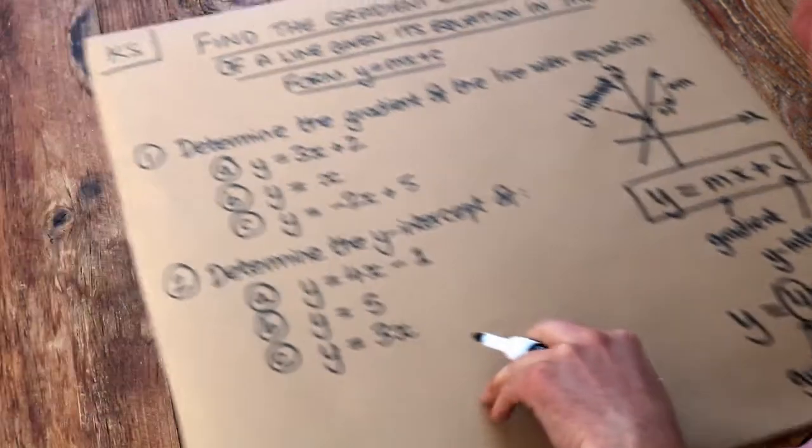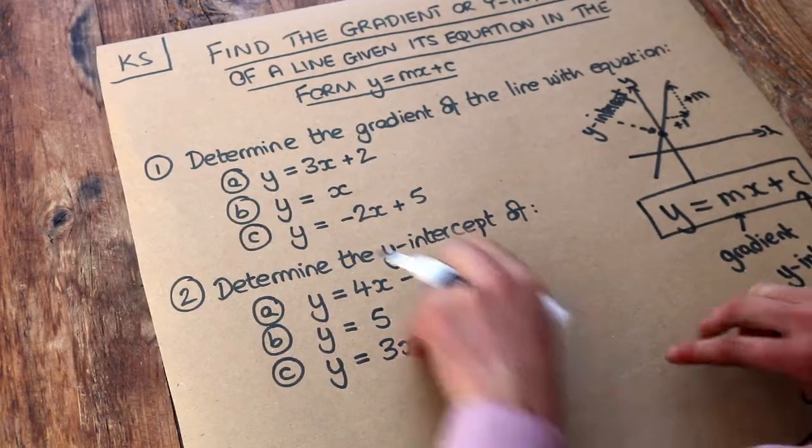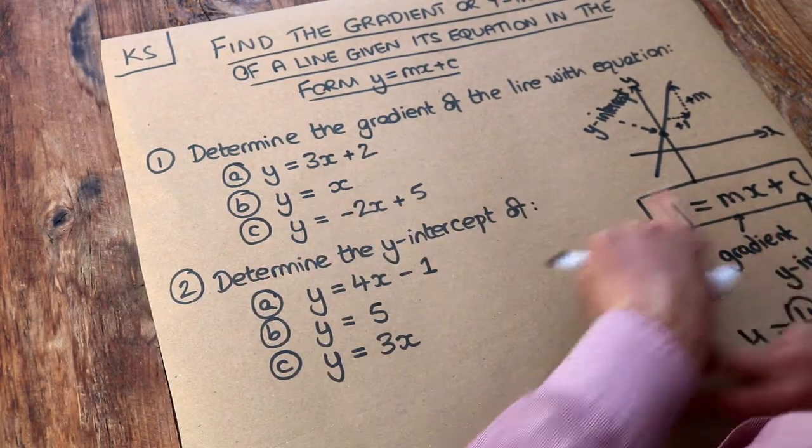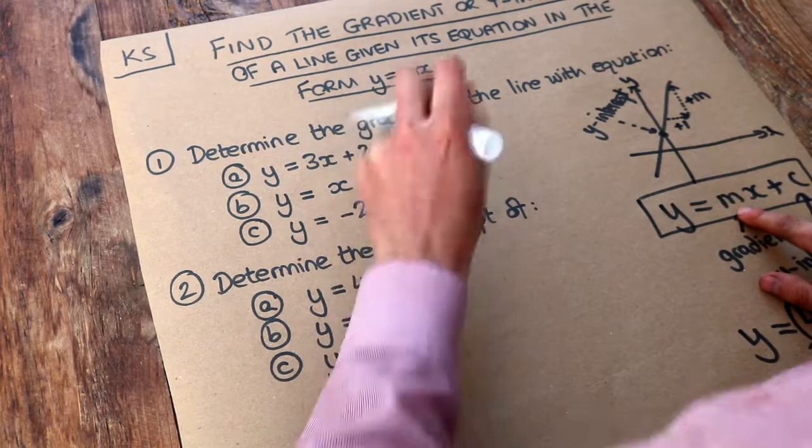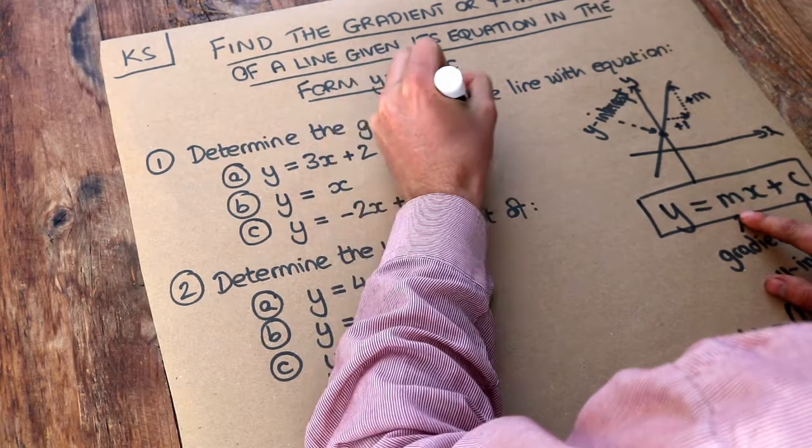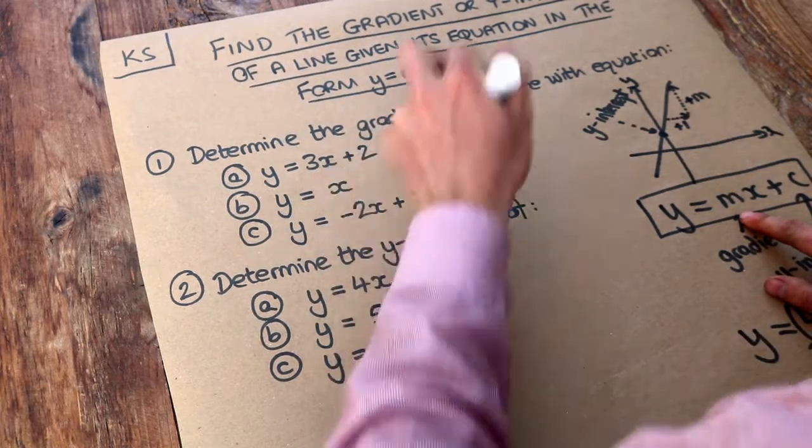So let's apply this principle to these questions here. y equals mx plus c. The number in front of the x term is the gradient. So we can see the gradient is equal to 3 here, the number in front of the x.